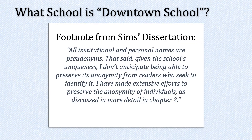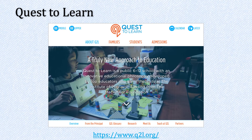Sims never actually tells us what school he's talking about. I actually lived and taught in New York City for about 12 years and went to grad school there as well, so I happen to know what school Sims is talking about. Sims leaves a footnote in his dissertation, which the book is based on, saying all institutional and personal names are pseudonyms, but given the school's uniqueness, he doesn't anticipate being able to preserve its anonymity. The school he's actually talking about is called Quest to Learn — a public 6-12 school with an innovative educational philosophy developed by top educators and game theorists at the Institute of Play with funding from the MacArthur Foundation.